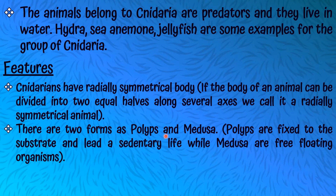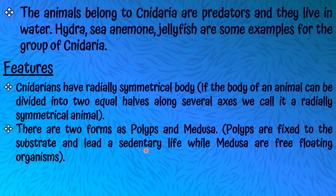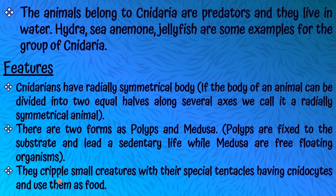There are two forms of Cnidarians: Polyps and Medusa. Polyps are fixed to the substrate and lead a sedentary life, while Medusa are free-floating organisms. Sedentary means a fixed or locked life because Polyps can't move. They cripple small creatures with their special tentacles having nematocysts and use them as food.